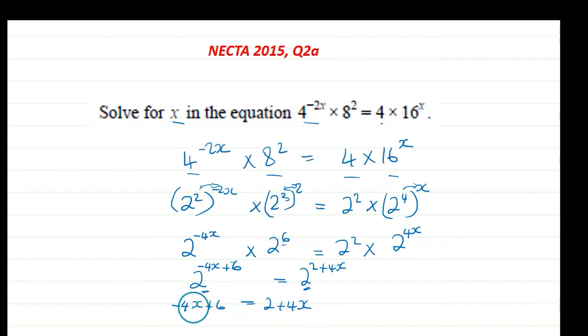Now if you rearrange this, you will get 6 - 2 = 4x + 4x. This will give you 4 = 8x. And if you rearrange that, you will get x = 4/8 which equals 1/2.